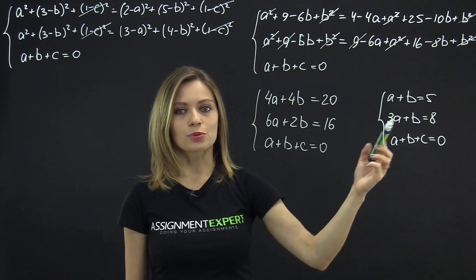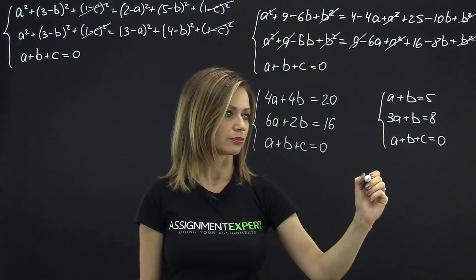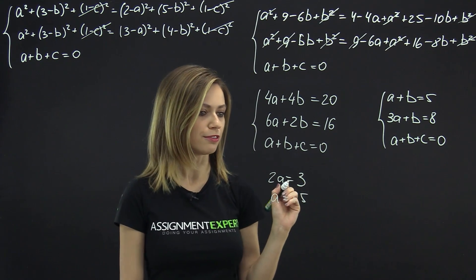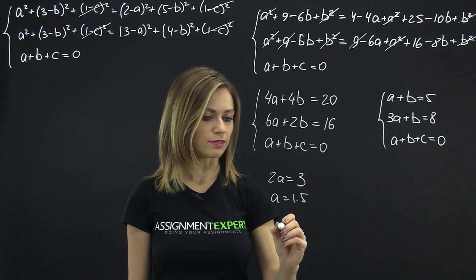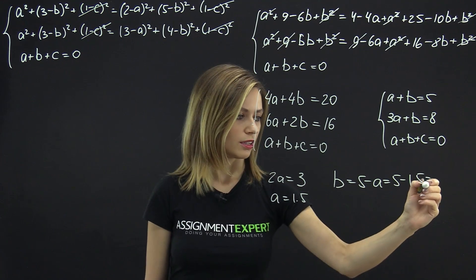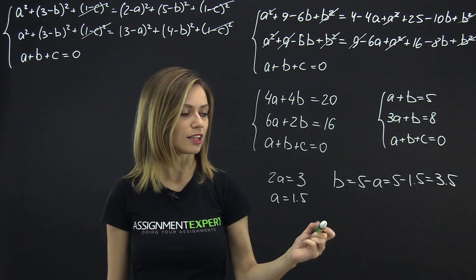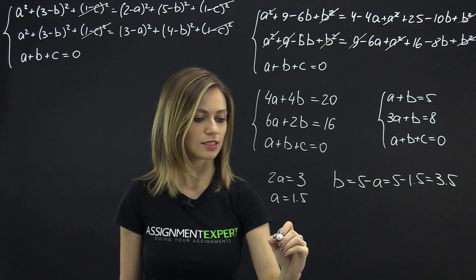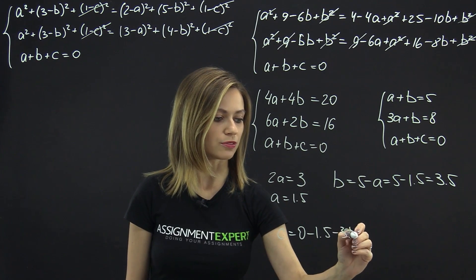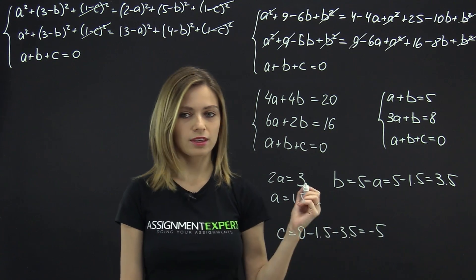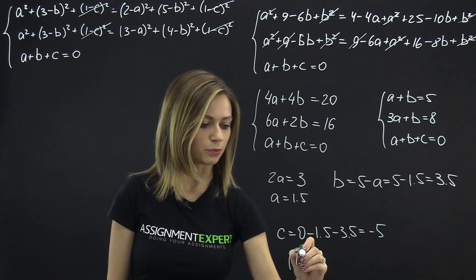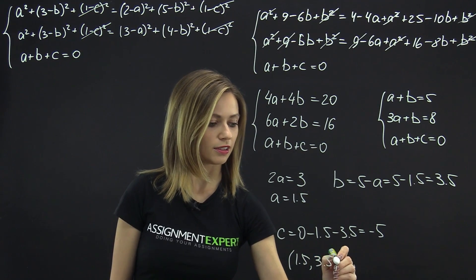From the first two equations we get 2a equals 3, so a equals 1.5. From the first equation, b equals 5 minus a, which is 5 minus 1.5, equal to 3.5. Finally, from the third equation, c equals 0 minus 1.5 minus 3.5, equal to negative 5. Therefore, the coordinates of the center of our sphere are (1.5, 3.5, -5).